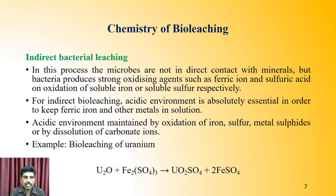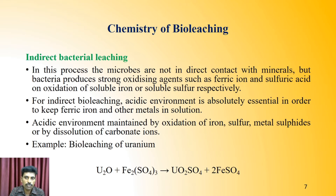In indirect bacterial leaching, microbes are not in direct contact with the ore. Instead, bacteria produce strong oxidizing compounds such as ferric ions and sulphuric acid. An acidic environment is absolutely essential to keep ferric ions and other metals in solution. This acidic environment can be maintained by oxidation of iron, sulphur, or metal sulphides. The bio leaching of uranium is a best example of indirect bacterial leaching — uranium oxide finally produces uranium oxide sulphate.